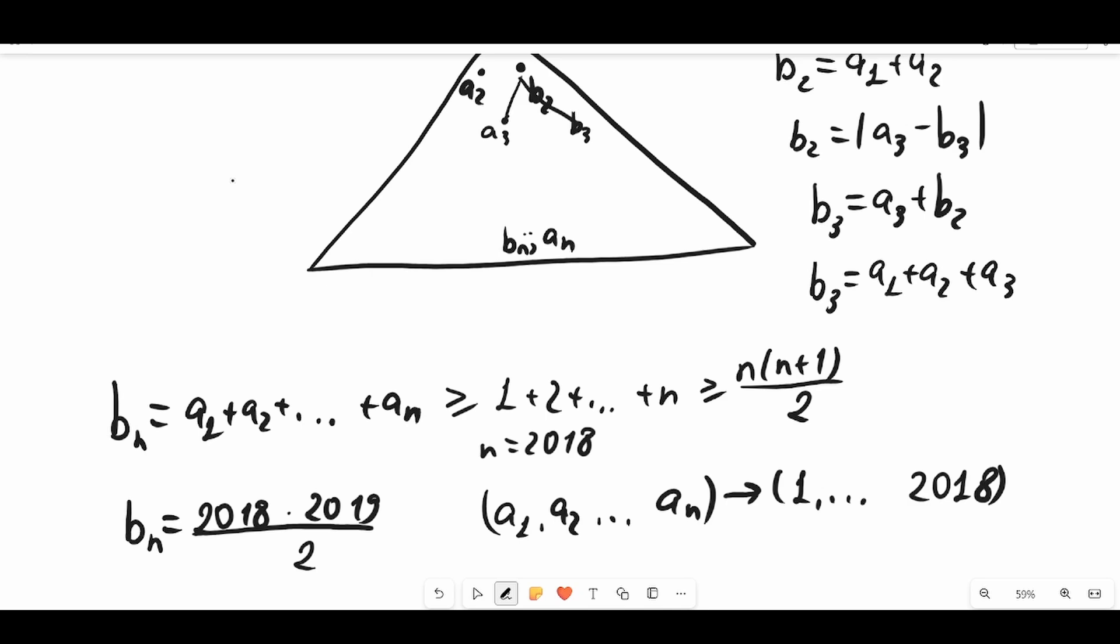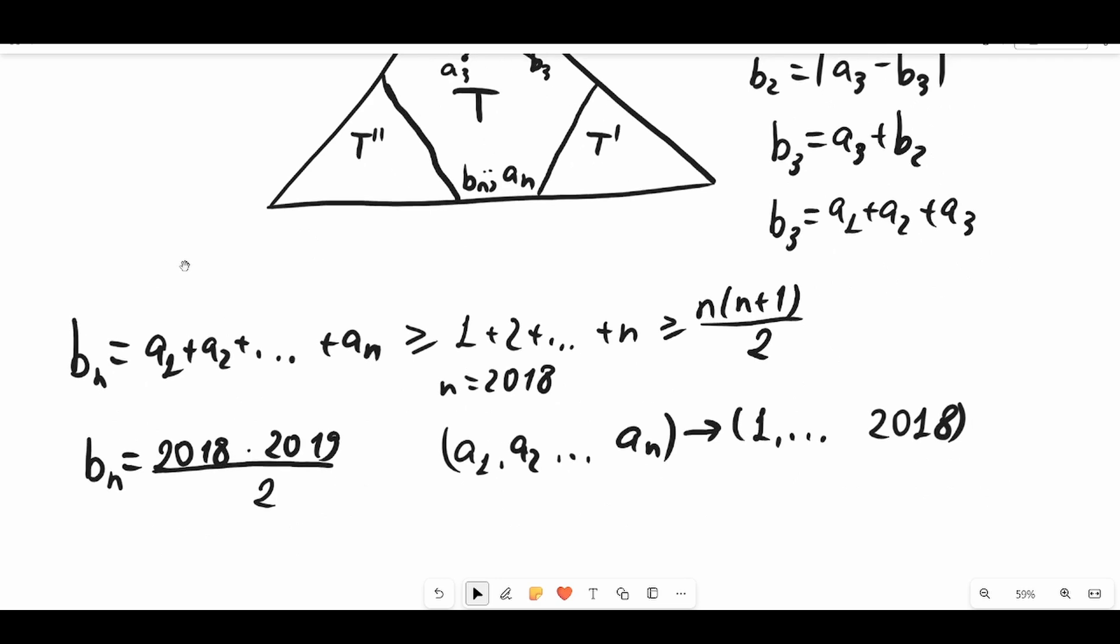So we know that all of these numbers are in this sub-triangle, this T figure. Now let's discuss two figures, T and T prime. In this case, one of them will have size more than (n-2) over 2, because in the bottom row we know that we have exactly n numbers. Two numbers we excluded for bn and an, and now we make two equilateral triangles, and at least one of them will have size more than (n-2) over 2.